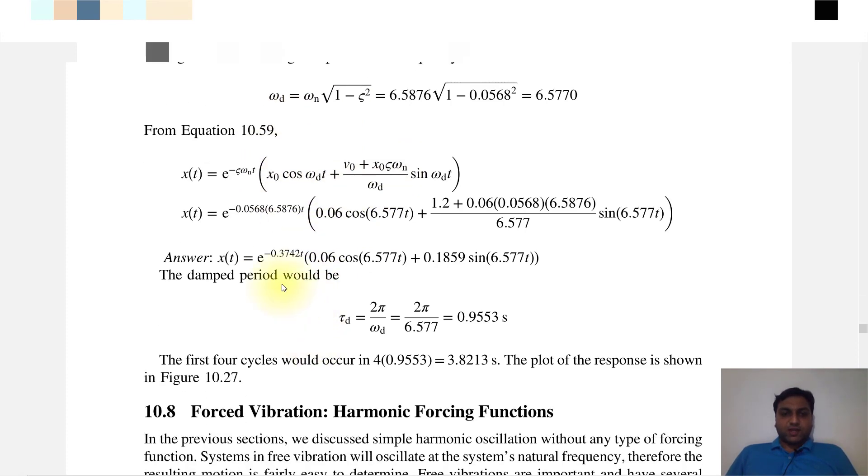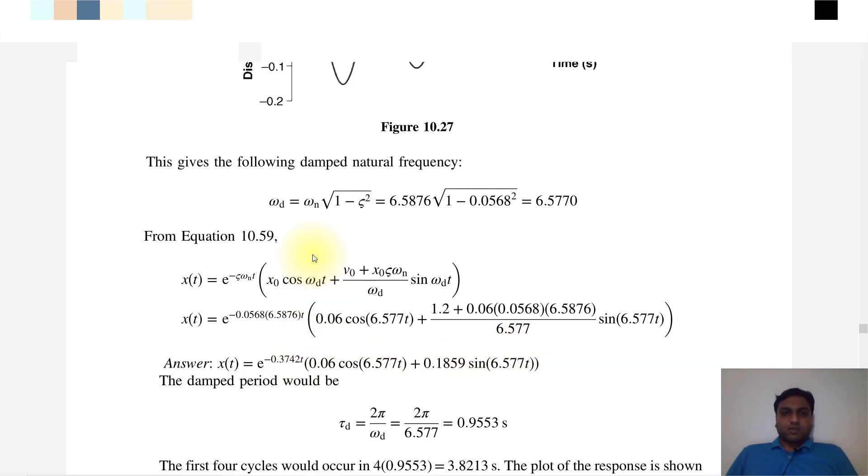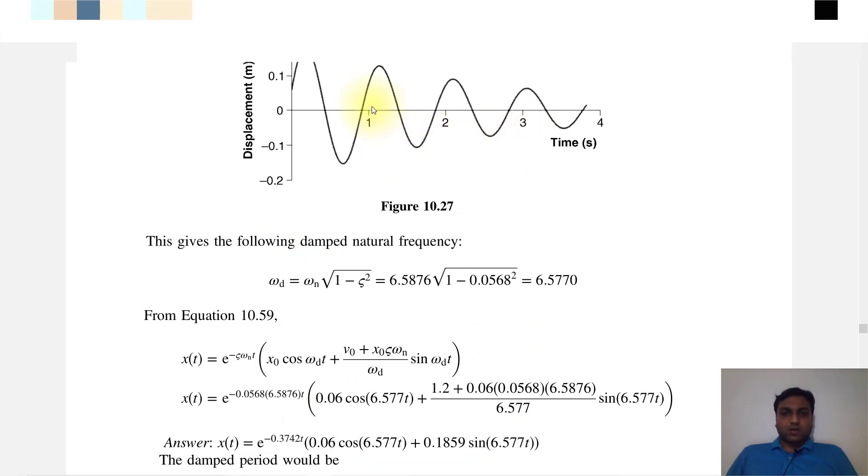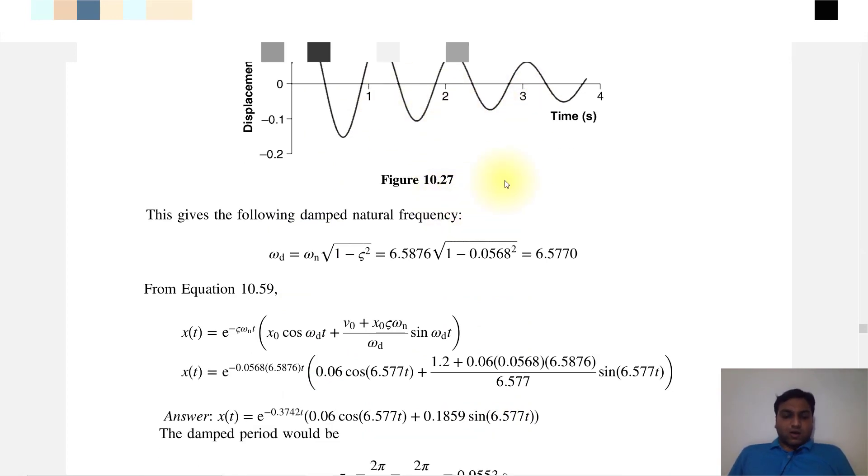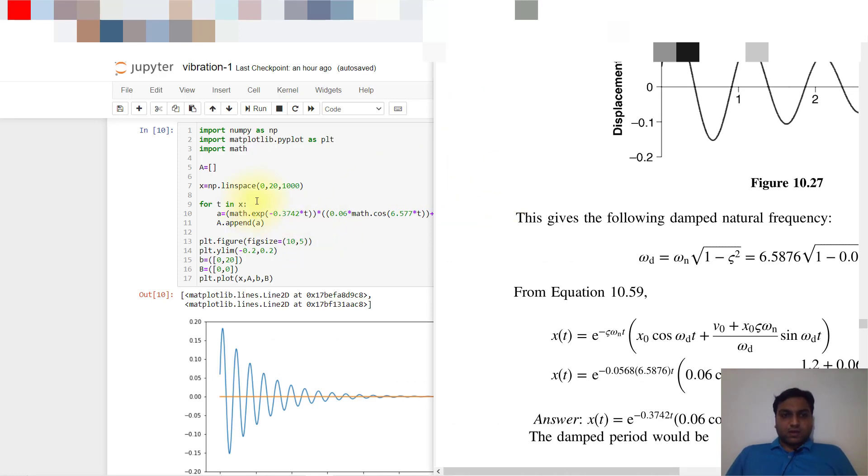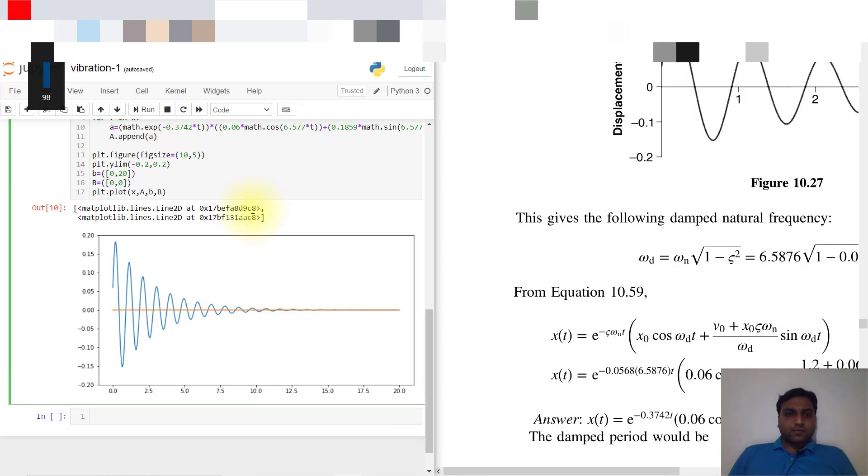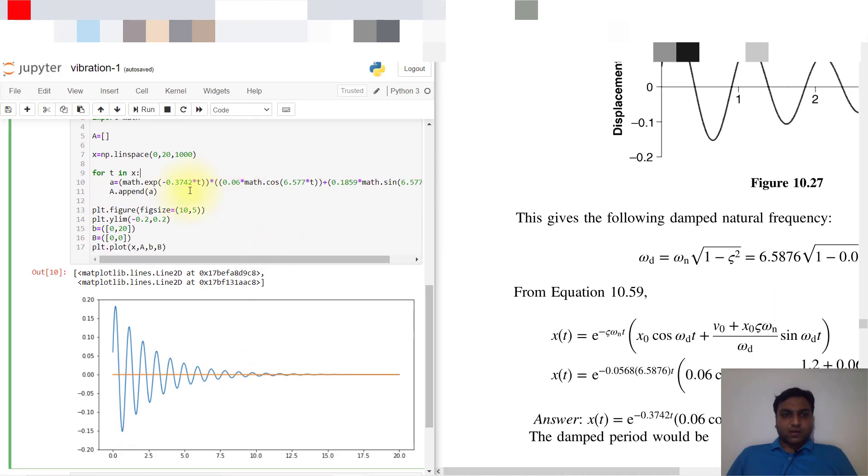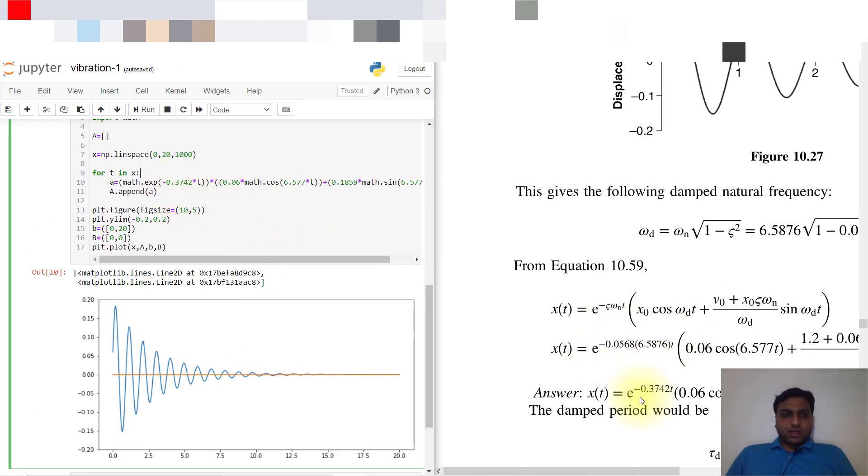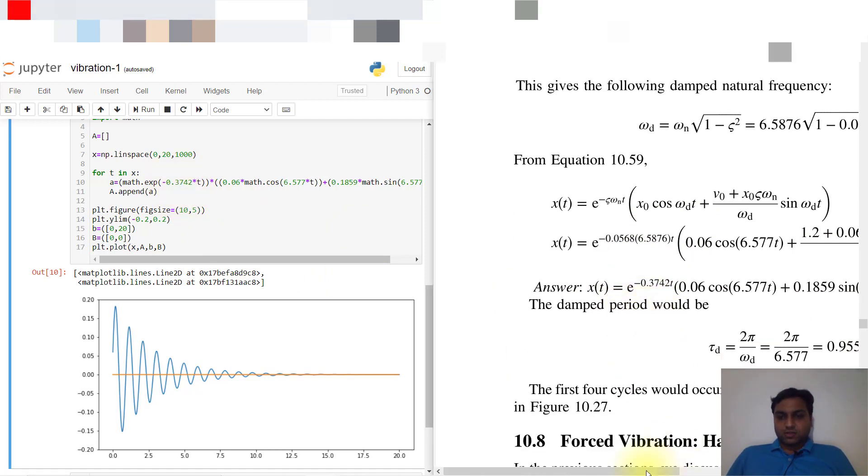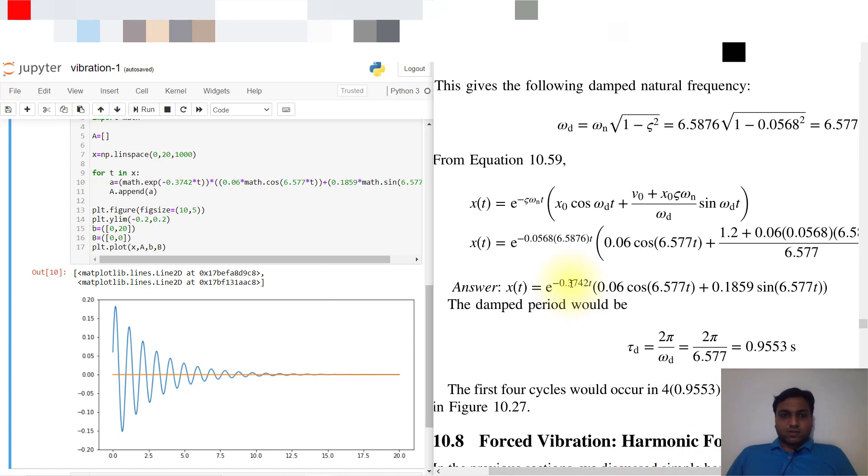From Equation 10.59, we will input our velocity, ωn, and ωd, then we will get e raised to this equation, which we will plot. If you will see, I have imported this: a equals e raised to minus 0.37t times the equation, which means 0.33t multiplied by 0.06 math.cos(θ) and math.sin(θ).